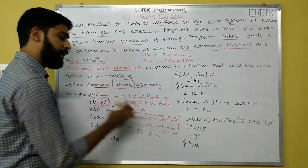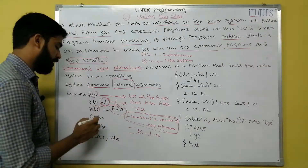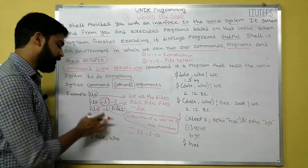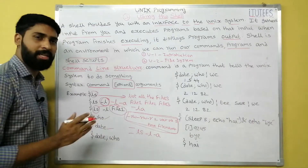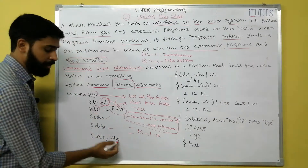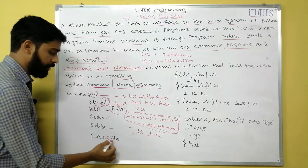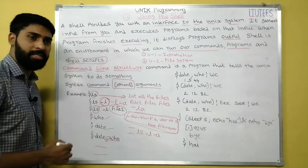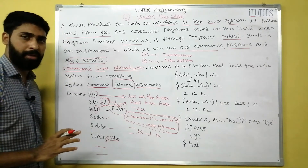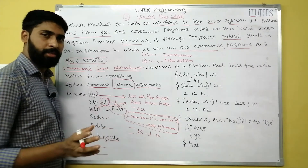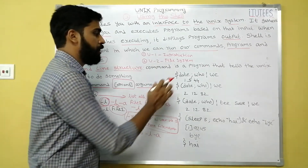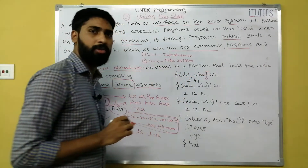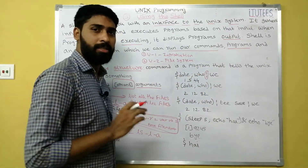The 'who' command displays currently logged-in users, and 'date' displays the current date. You can combine commands using a semicolon — for example, 'date; who' displays the current date and then shows who is currently logged into the system.